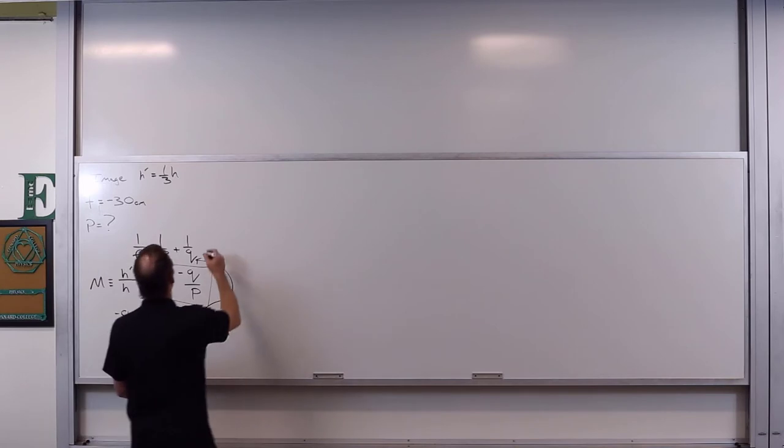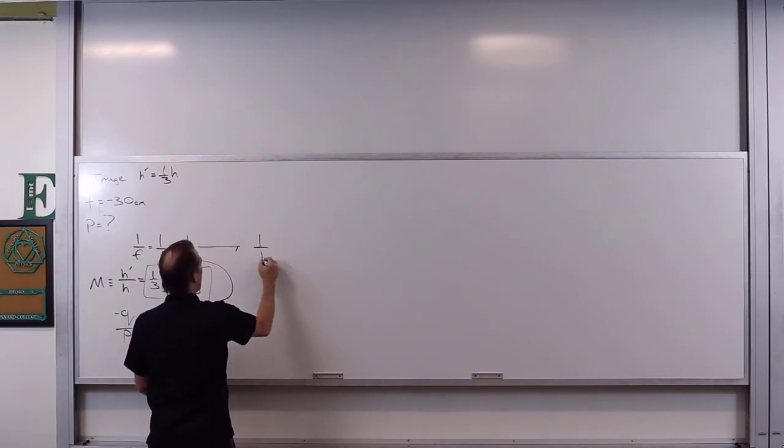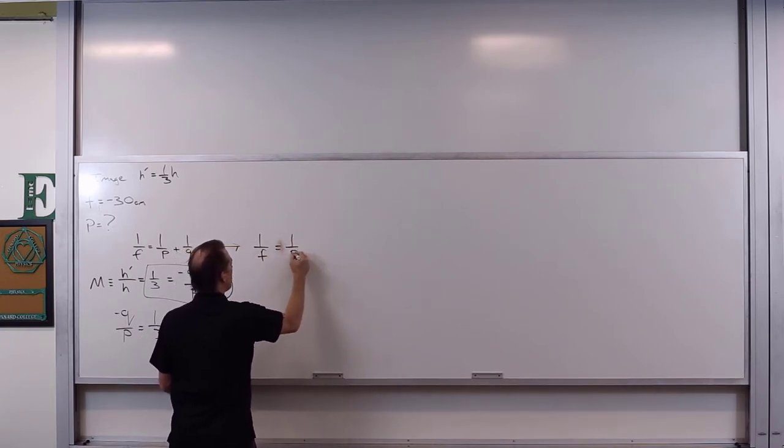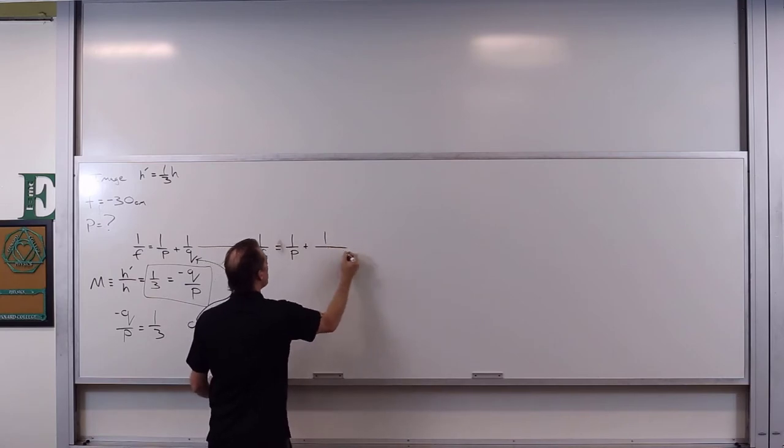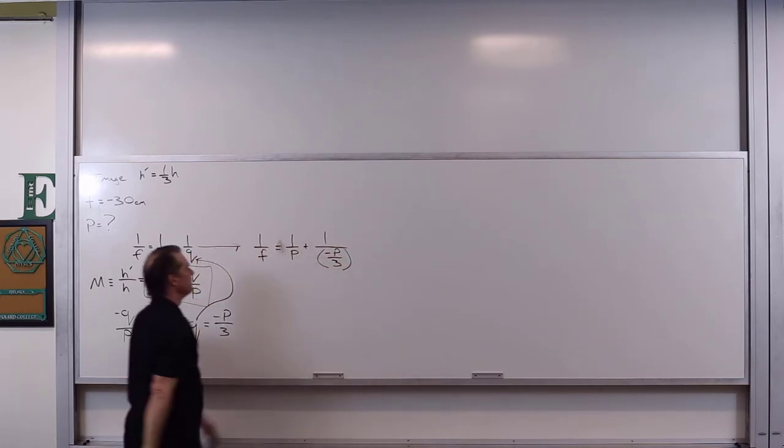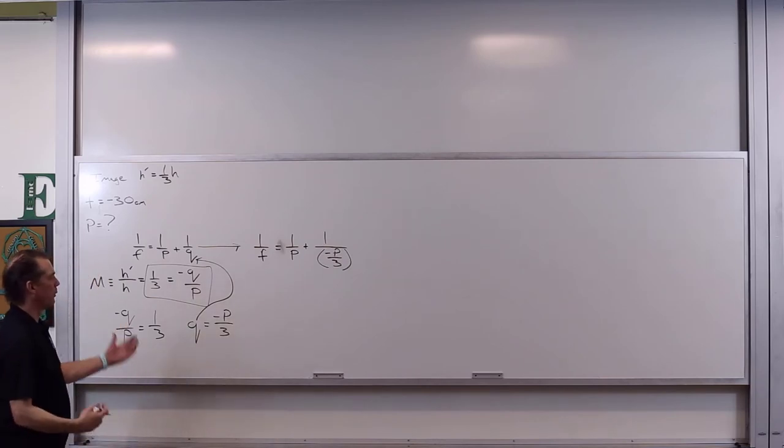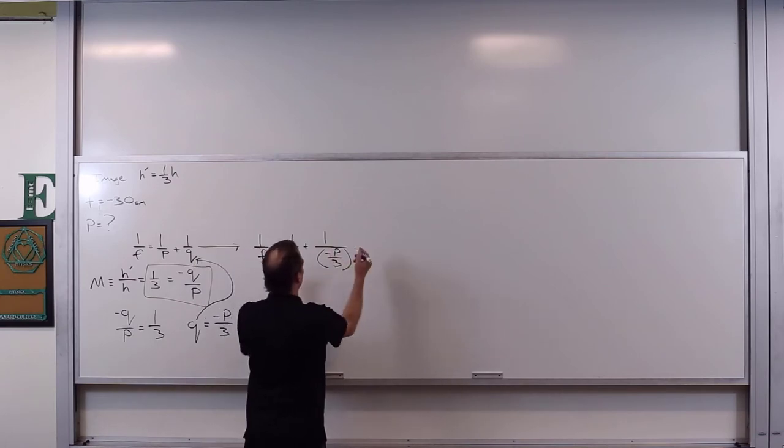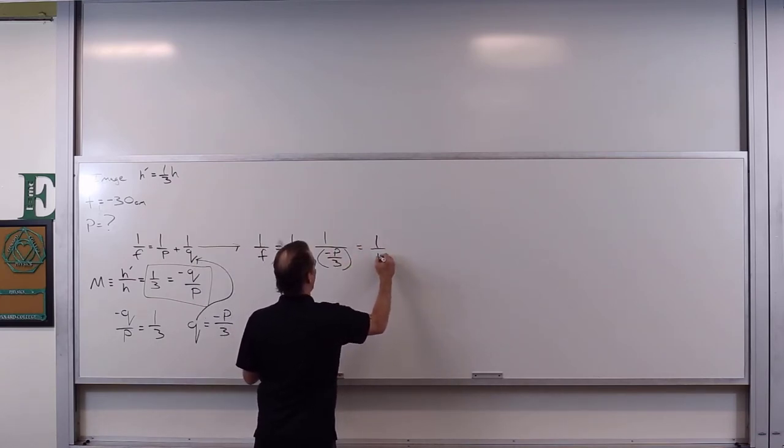Well, let's write this out. This expression now becomes one over f is equal to one over p plus one divided by negative p over three. Can we mess around with that a little bit? Of course we can.